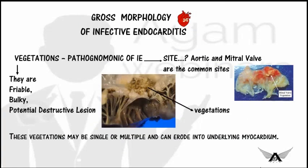Now we look at the morphology of infective endocarditis. In gross morphology — features identifiable from a gross specimen — the hallmark feature of infective endocarditis is vegetation. The vegetation appears as a friable, bulky, destructive lesion. The lesion may be single or multiple, and the size may vary. The lesion occurs mostly on the aortic and mitral valves on the left side of the heart.